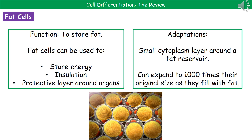Our second specialised cell are the fat cells — not the cute little adipose cells you saw on Doctor Who, sadly less cute. Their whole purpose is to store fat. We need fat to give us an energy store, we also use fat as insulation to help keep body heat in, and finally it forms a protective layer around our organs, which prevents a minor knock from causing serious organ damage. So fat cells are useful, contrary to what people may believe.